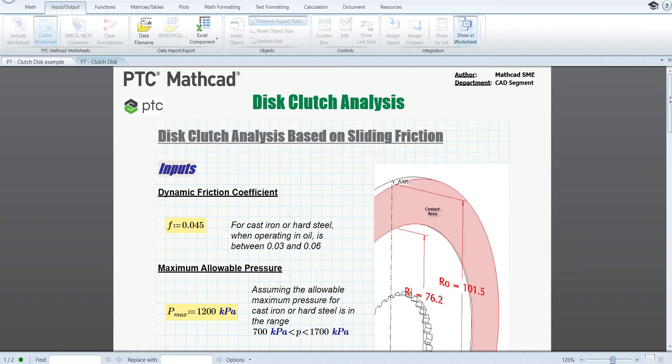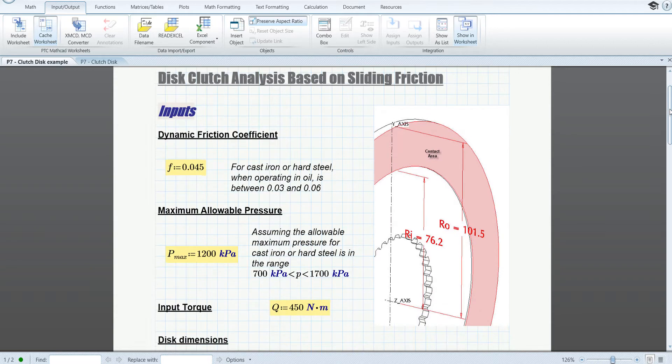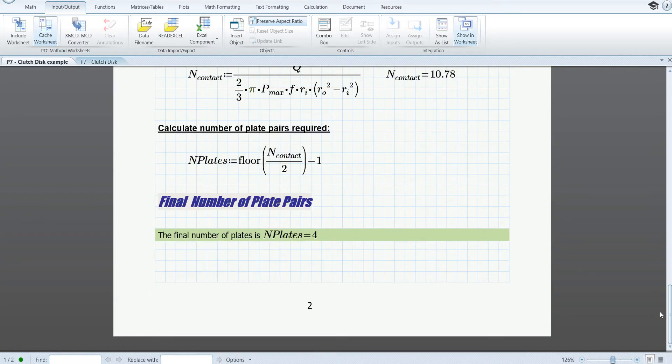Here we have an example worksheet, a disk clutch analysis worksheet, which takes some input conditions and the output is the final number of plate pairs needed.